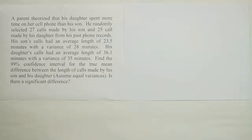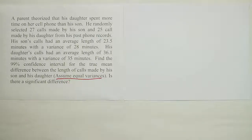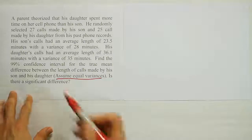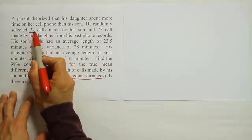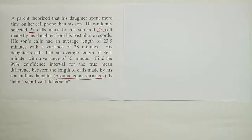The first thing to recognize is that this is a T interval. The fact that they mention assuming equal variances is usually only discussed with smaller sample sizes. Looking at the two sample sizes — 27 calls and 25 calls — they are small, and the mention of equal variances confirms this is a T interval. We want to construct the four steps of a confidence interval, starting with writing down all the given information.